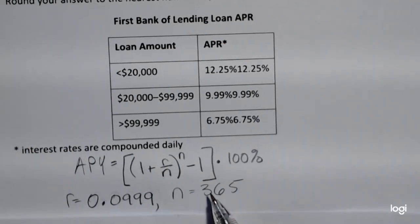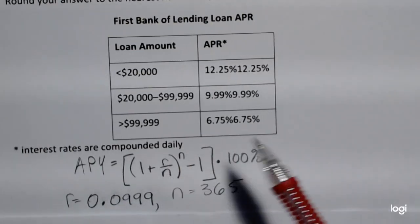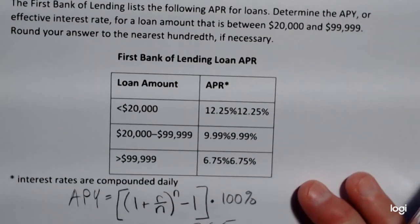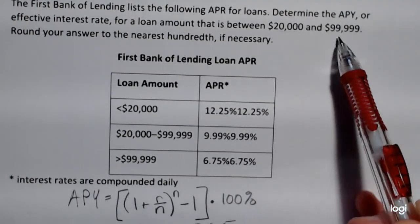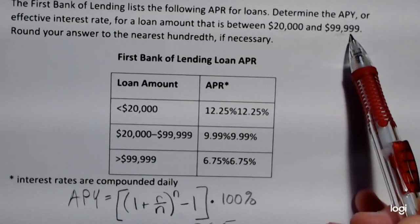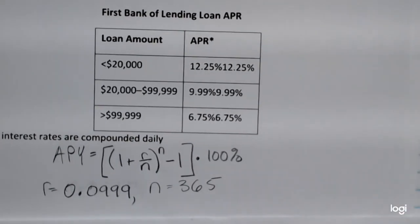n will be 365. And we need the interest rate. We're told that we're looking for the loan amount that is between $20,000 and $99,999.